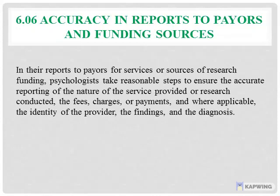Standard 6.06 relates to accuracy in reports to payers and funding sources. Per this standard, in reports to payers for services or sources of research funding, psychologists take reasonable steps to ensure accurate reporting of the nature of services provided or research conducted, the fees, charges or payments, and where applicable the identity of the provider, findings, and diagnosis. This standard emphasizes accuracy, honesty, and truthfulness — when billing insurance companies, charging consulting fees, or documenting grant-related expenses, psychologists must provide accurate reports. Similarly, when receiving research support from their institute or other sources, accurate expense reports must be provided.